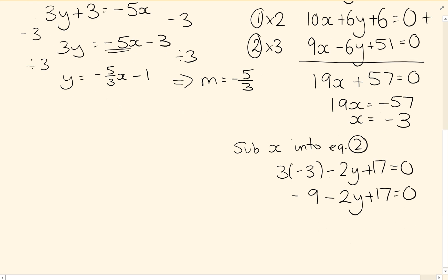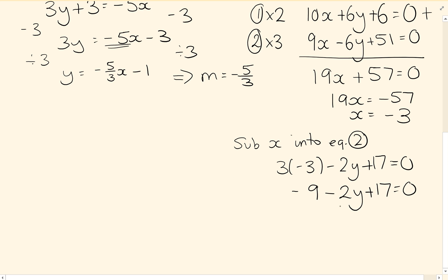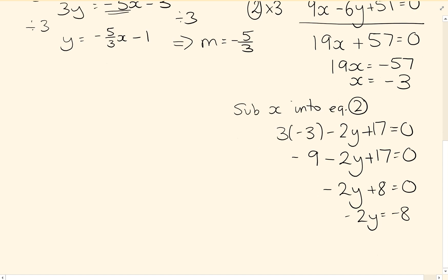So 17 minus my 9 there, I'm going to have minus 2y plus 8 equals 0. Minus 2y equals minus 8, so y equals positive 4.